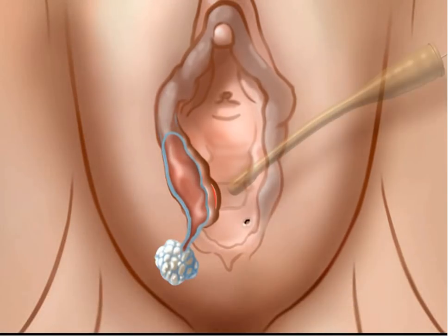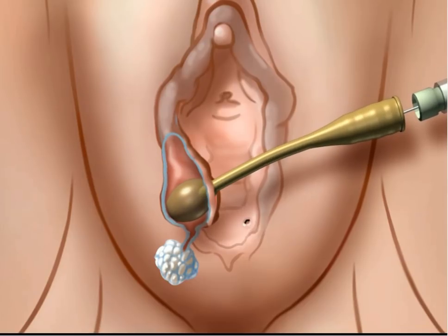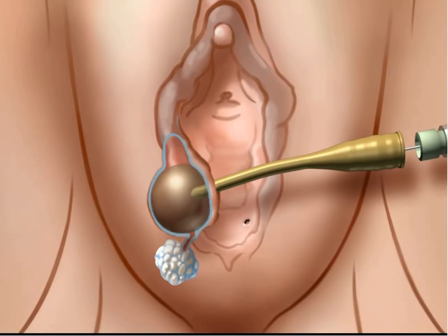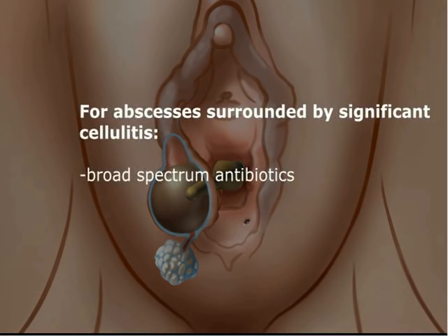The tip of a deflated word catheter is placed within the empty cyst cavity. A syringe is used to inject 2–3 cc's of sterile saline through the catheter port to inflate the balloon. The balloon is inflated to reach a diameter that will prohibit the catheter from falling out of the incision. The injection port of the word catheter can then be tucked inside the vagina, which prevents the balloon from being pulled out by traction from labial movement.